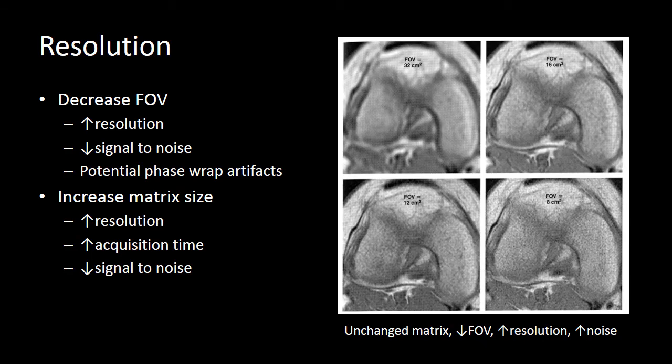Let's look at an example. Here we have four different images of the knee. We have cropped some of the image. You can see field of view 32 centimeters, 16, 8 centimeters, and 12 centimeters. In each case we're not changing the matrix, but we're decreasing the field of view over time. By decreasing the field of view from 32 to 16 to 12 to 8, we get progressively better resolution.